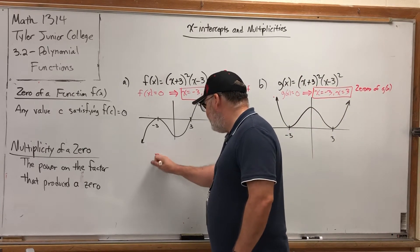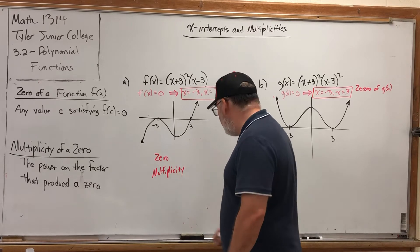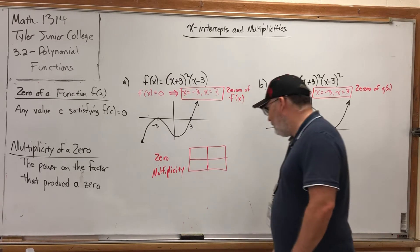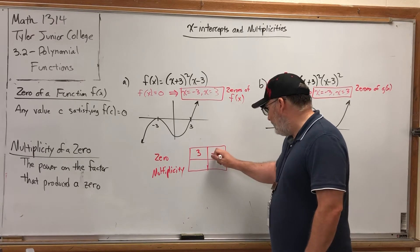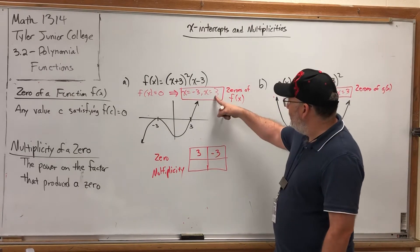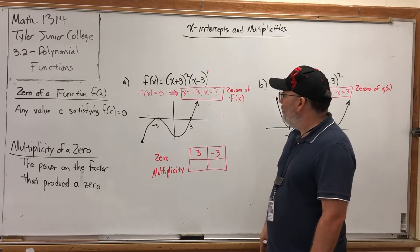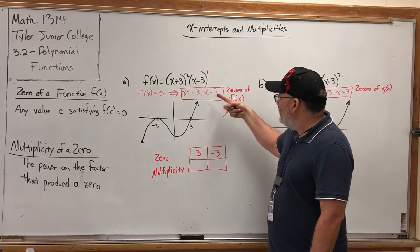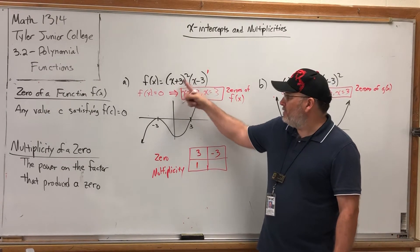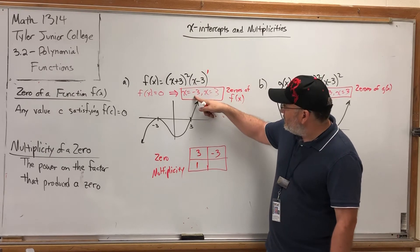So, I'm going to make a table here that lists the zeros and the multiplicity. It's going to be a very short table, two by two. The first zero is three, and the second zero is negative three. But what are their multiplicities? Well, the three came from this factor. Now, what's the power on this factor? It's an implied power of one. Multiplicity is the power on the factor that produced the zero. So this three has a multiplicity of one. But what about negative three? Negative three came from the first factor, and its power is two. So the multiplicity is the power on the factor that produced the zero. So the multiplicity of negative three is two.